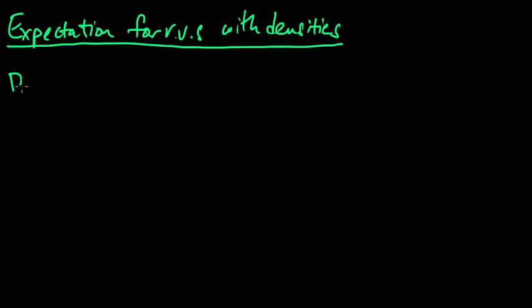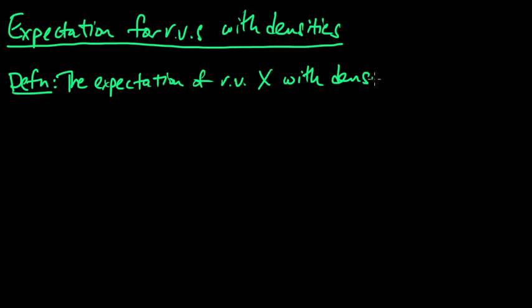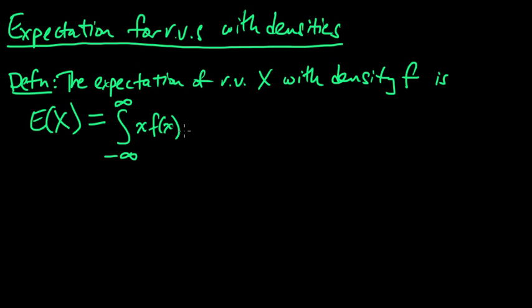And here is the definition. So this video is going to be basically the parallel of the previous one. The expectation of a random variable x with density lowercase f is the expected value. We write it as E of x, and it's the integral from minus infinity to infinity of the value of little x times f of x dx.